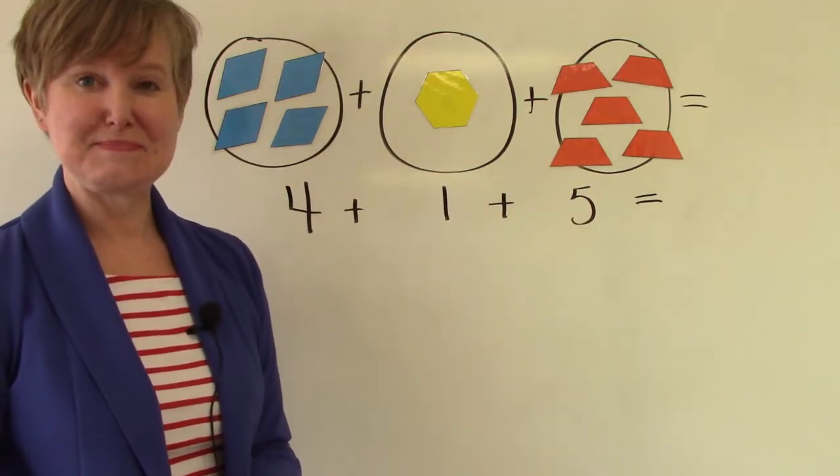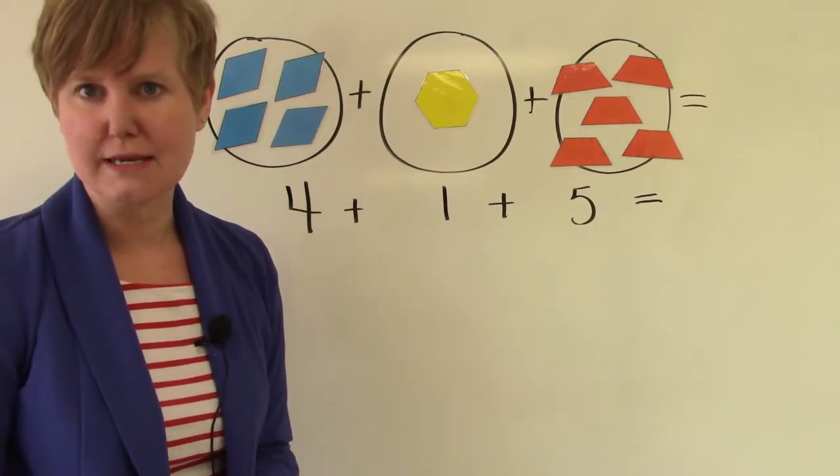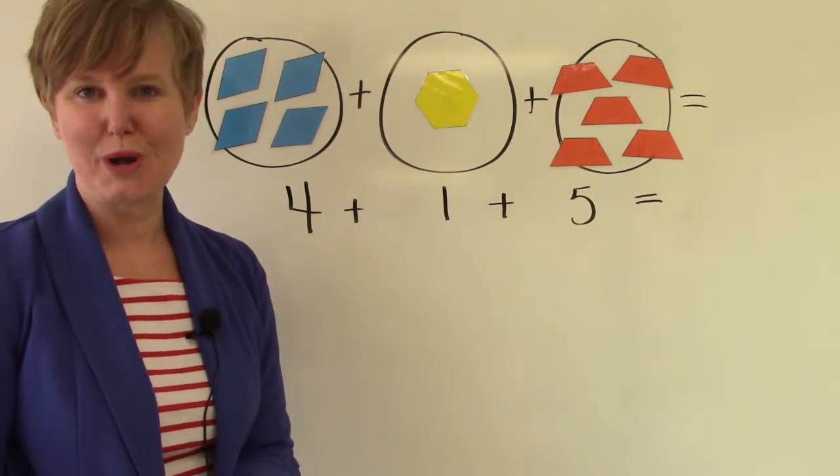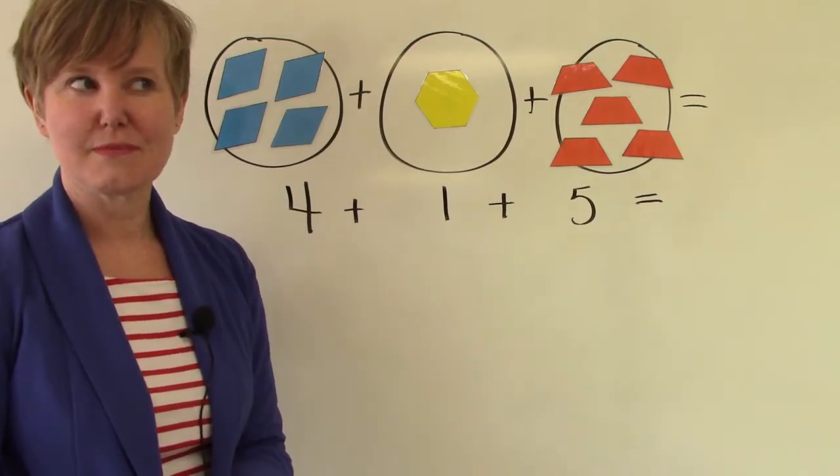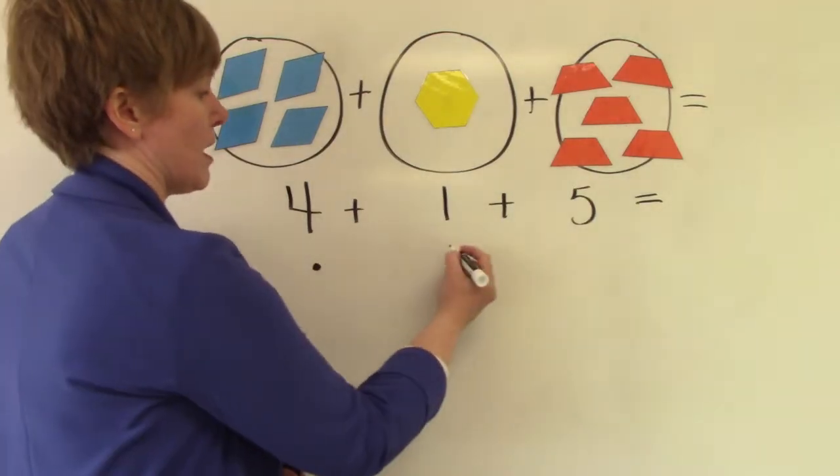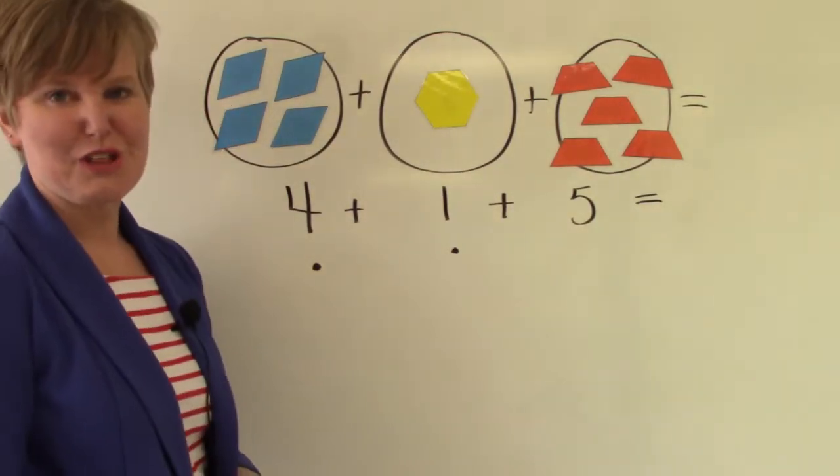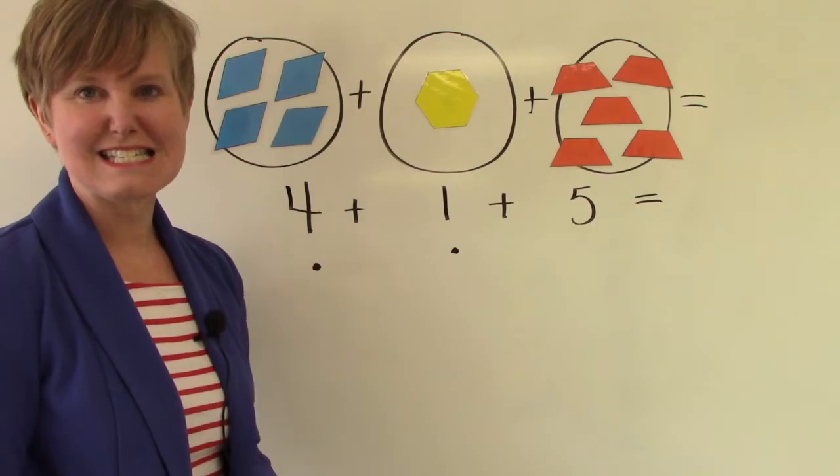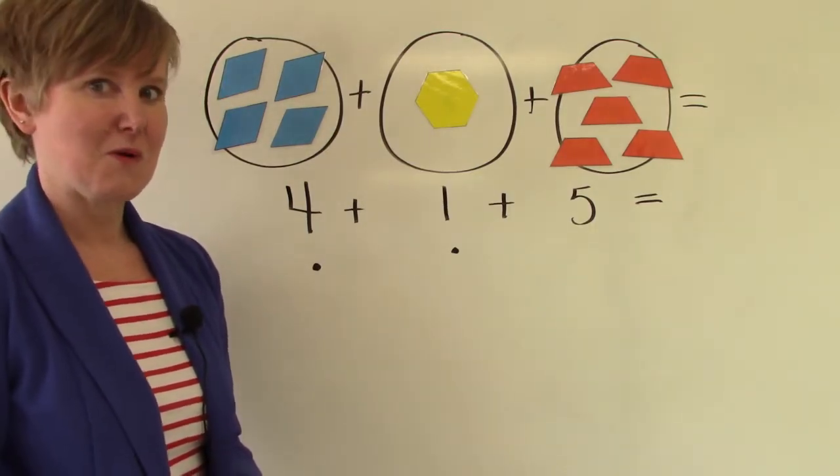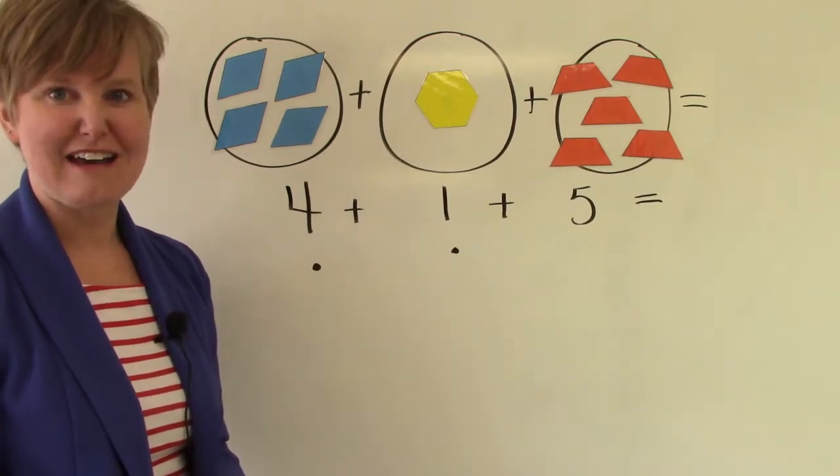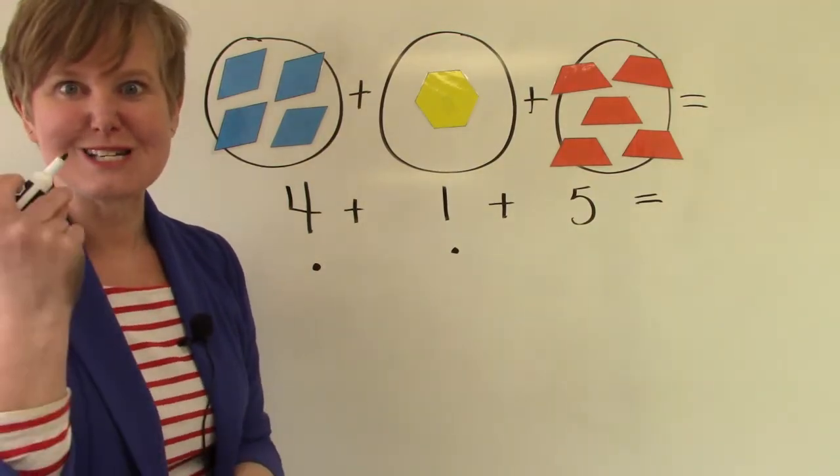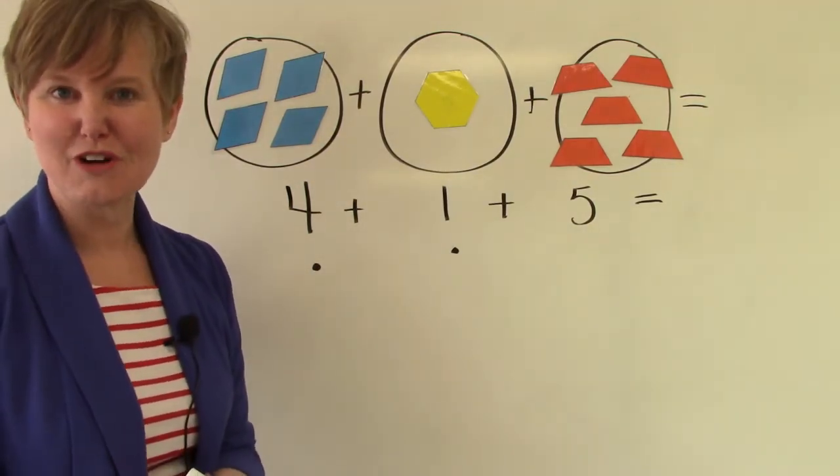Did you know that we could do this in any order? We could choose which two numbers we want to put together first. I think I want to add four plus one together first because it's the easiest one for me. Four plus one. Well I know that four plus one is five and now I just have to add five plus five together and that one is a snap because it is one of our doubles.